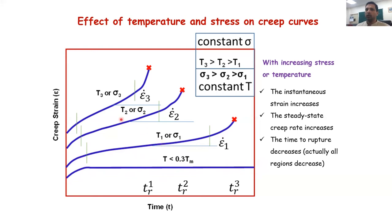As we increase temperature from T1 to T2 to T3 (T3 being highest), stage 1 occurs at a much smaller time and the stage 2-to-stage 3 transition also occurs at a much lower time. The strain rate — the slope of the curve — keeps increasing: strain rate 1 < strain rate 2 < strain rate 3. So creep rate increases as we keep increasing the temperature.